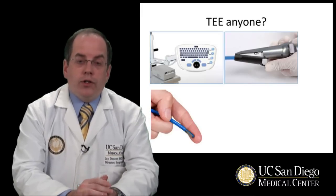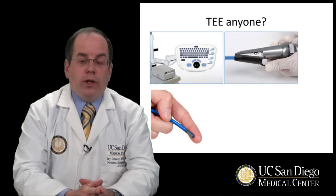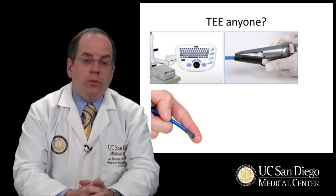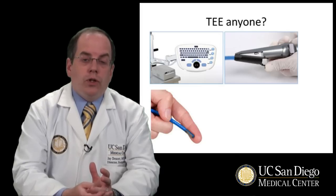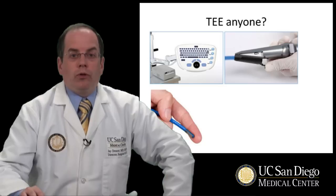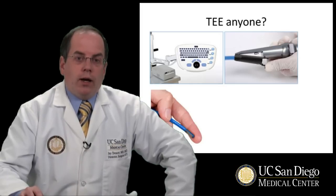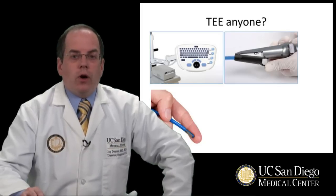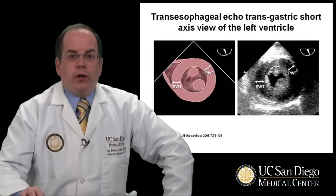Another technique available for the ICU is the use of the disposable indwelling transesophageal echocardiogram. This device is currently on the market; it can be used like an NG tube and kept in place for up to 72 hours after surgery, and patients can undergo continuous or repeated measurements of ejection fraction. By continuously or frequently using the short axis view, it is possible to look at cardiac performance in a way that's probably more meaningful than the use of the Swan-Ganz catheter. The machine uses the short axis view through the stomach, and it's possible over time to see ejection fraction, cardiac contractility, cardiac filling, and cardiac performance.